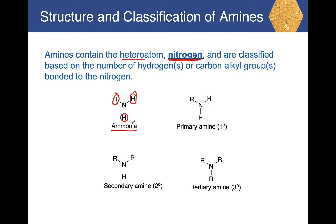Ammonia is a specific molecule with nitrogen and three hydrogens bonded to it. If however there is one alkyl group (R, a carbon-containing group) and two hydrogens bonded to the nitrogen, this type of amine is known as a primary amine, symbolized as 1°, because it has just one alkyl group bonded to the nitrogen.